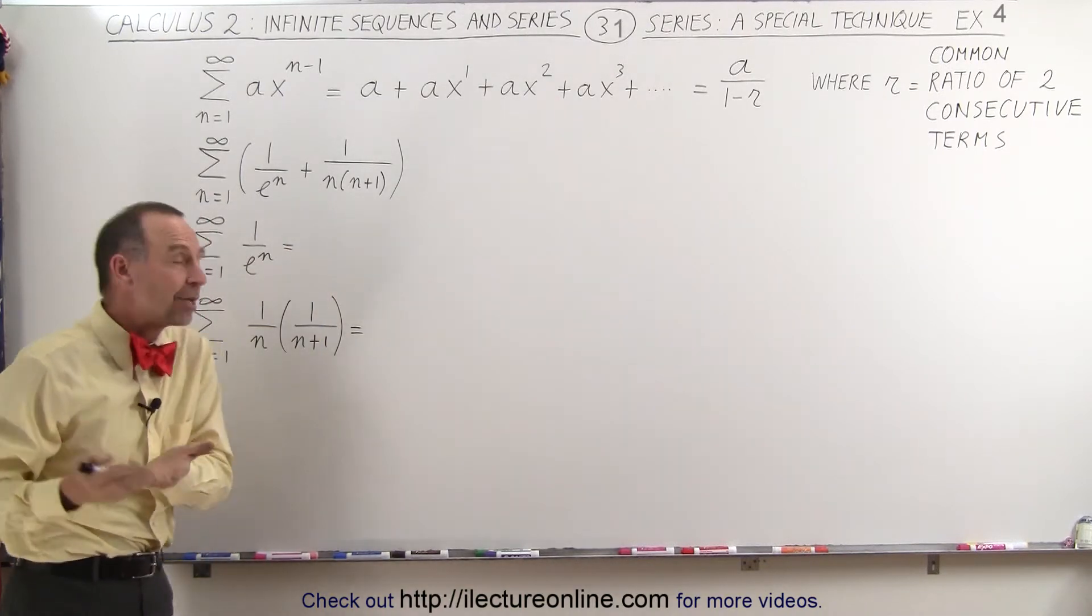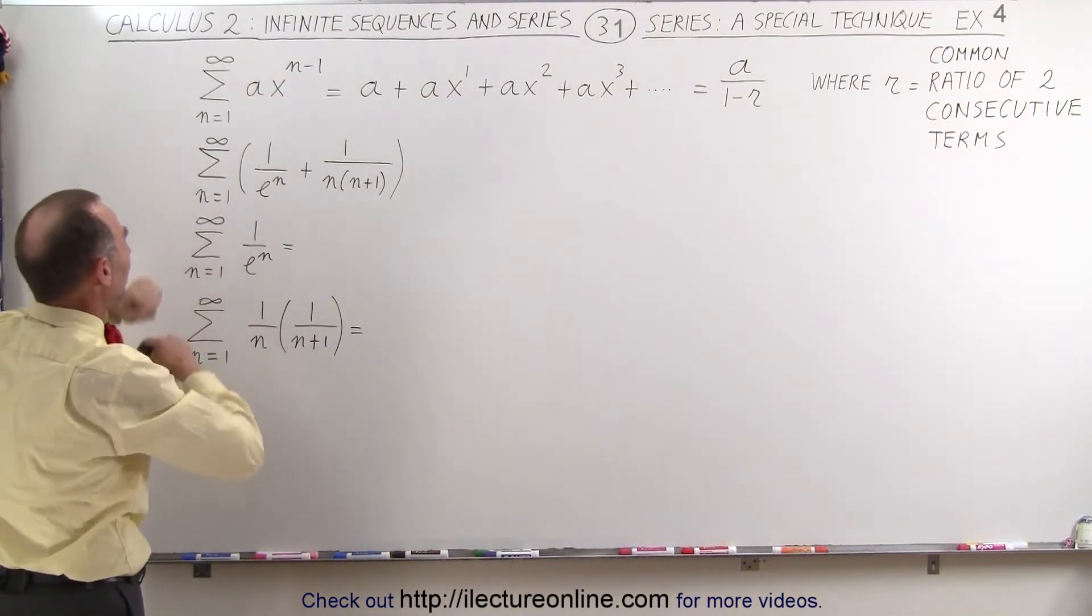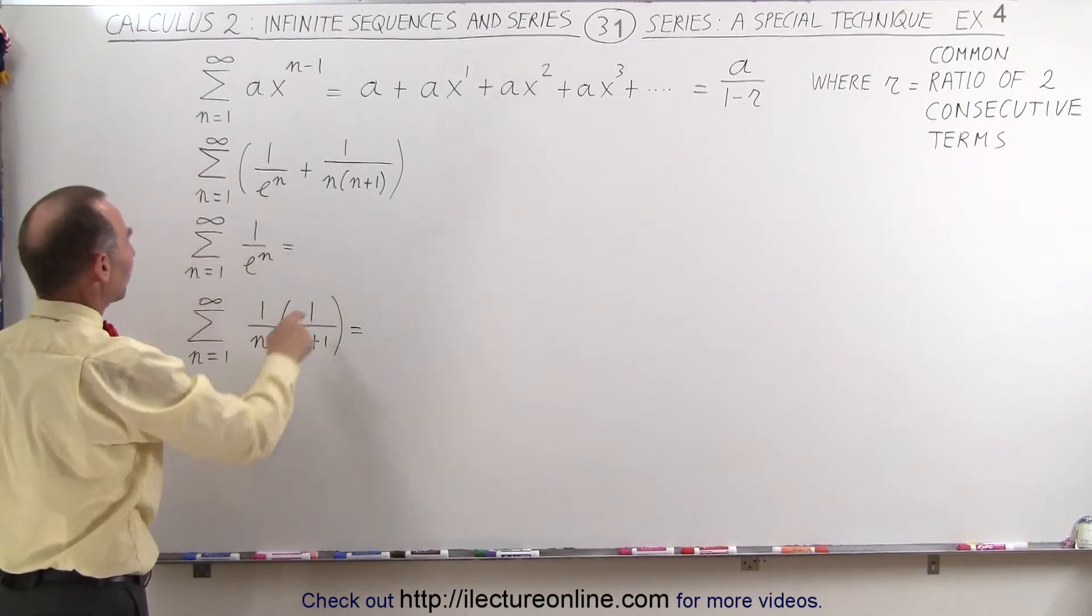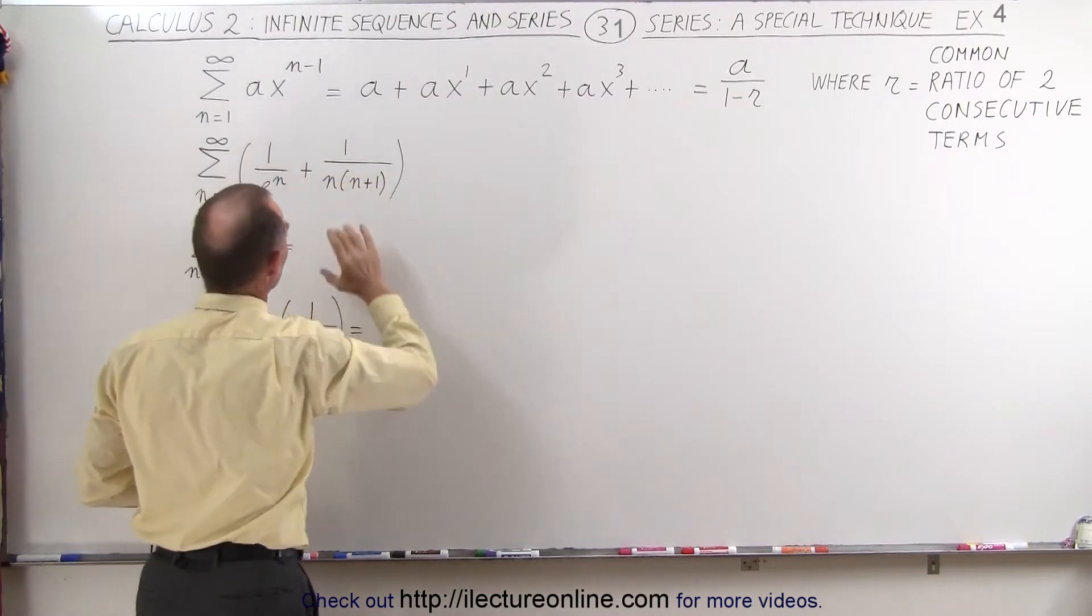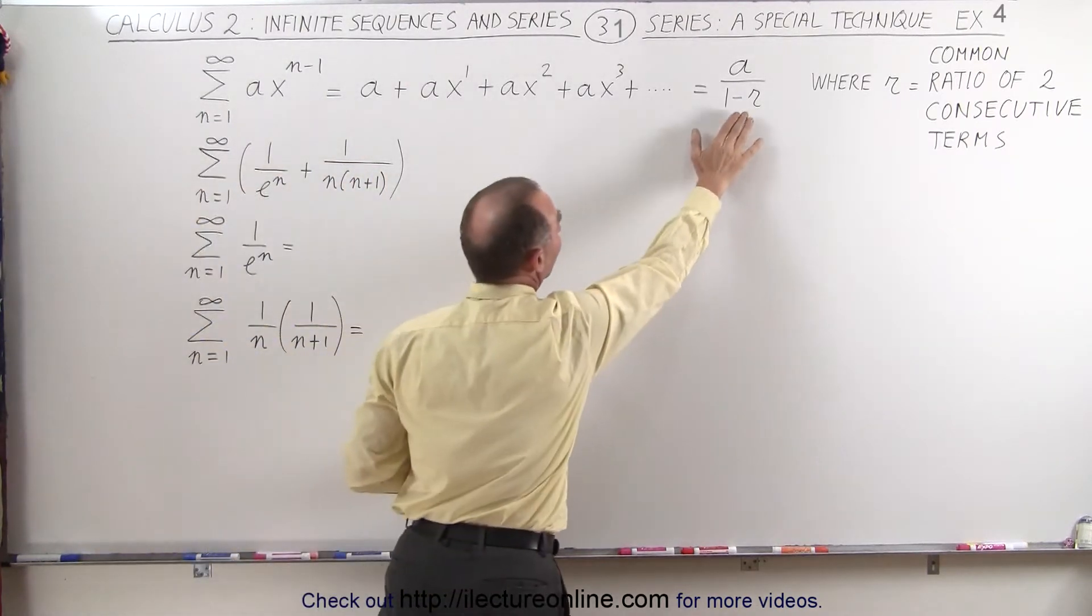So what we can do here is separate them into two separate parts. Let's first work on this and see if we can take this infinite series and make it look like this general form, because if we do, we can use this to find the sum.